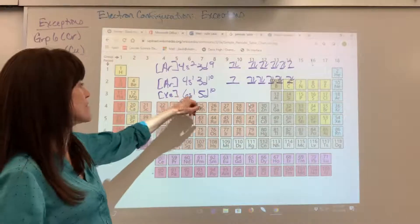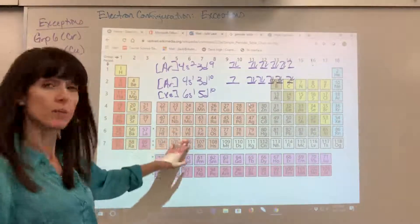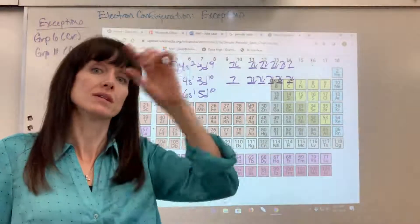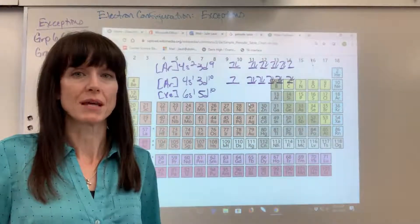Silver would be the 5S1, 4D10. Same is true when we did the chromium, so molybdenum and tungsten, that they will also take one electron from the S to have a half-filled D, and that's going to be more stable.